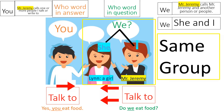So, 'we' means Mr. Jeremy and another person or people. Just put your own name where you see Mr. Jeremy — so if your name is Zabow, it says Zabow and another person or people is 'we.' And 'you' means Mr. Jeremy, or Zabow, calls one or more people they talk to or write to — that's 'you.'